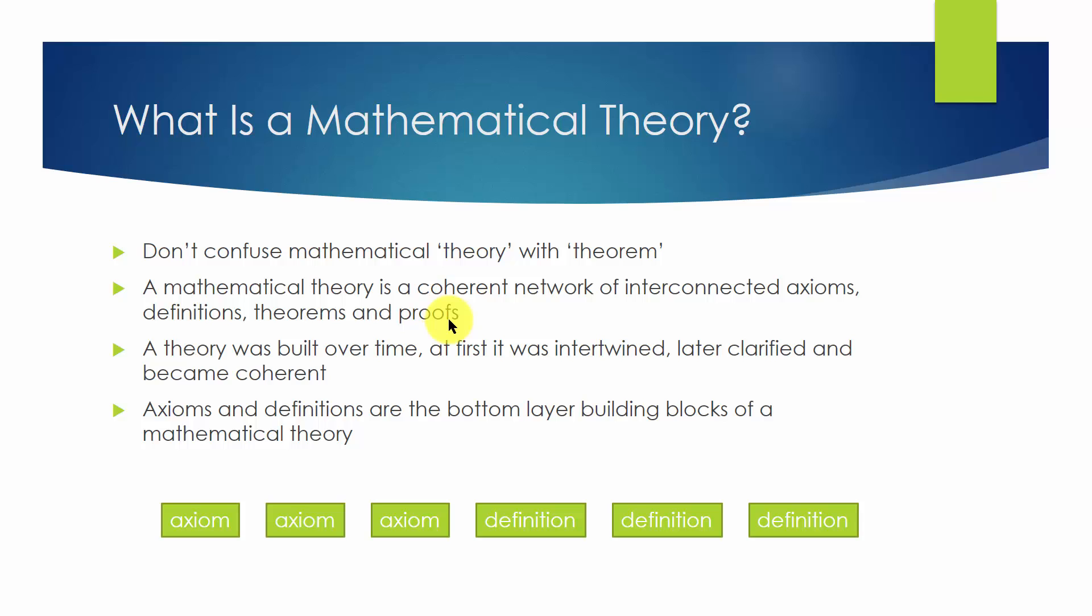Mathematical theories are developed over time. Mathematicians try to solve problems and to state and prove theorems. In order to do so, they formulate axioms and definitions to capture the concepts they wish to use. Obviously, this process is not linear and all concepts were intertwined.